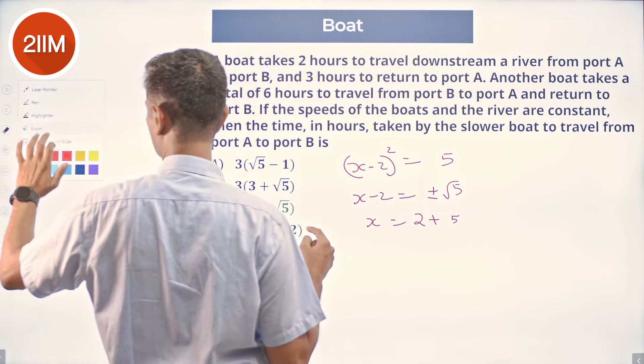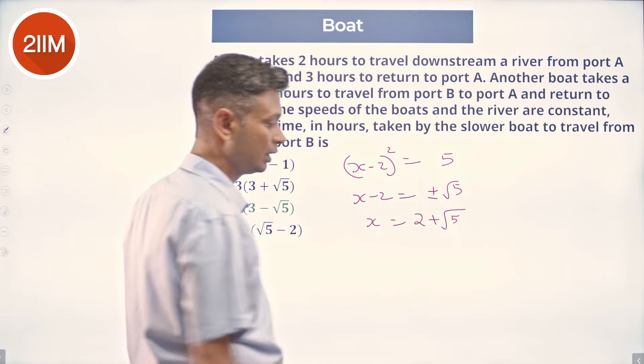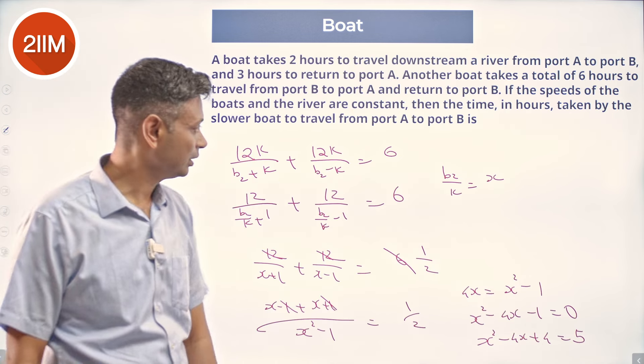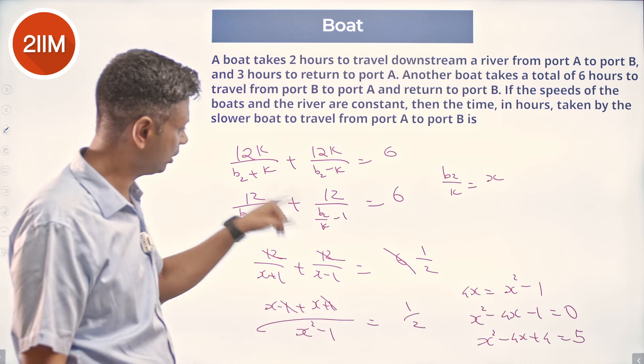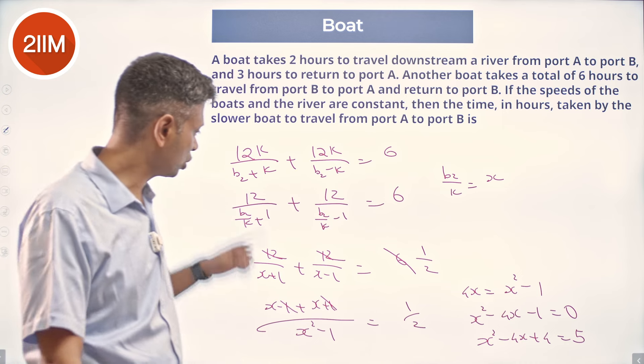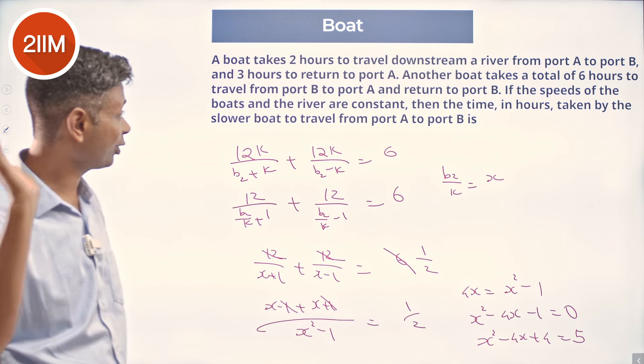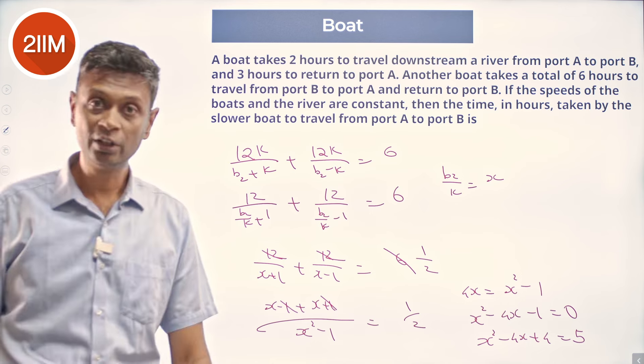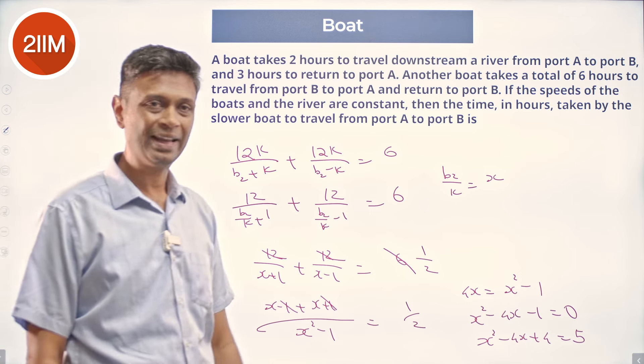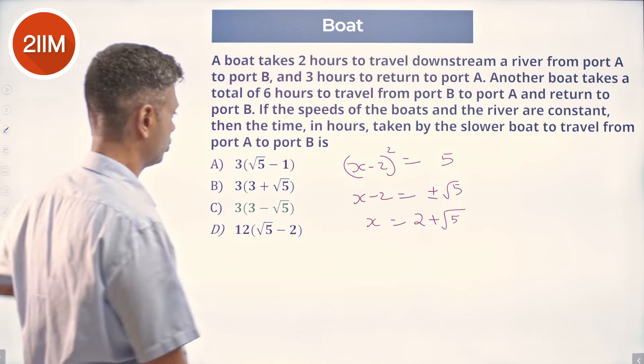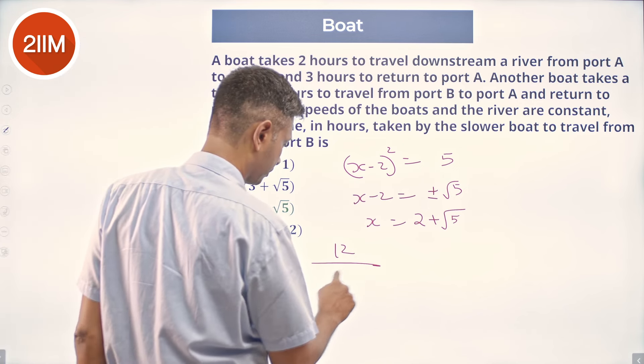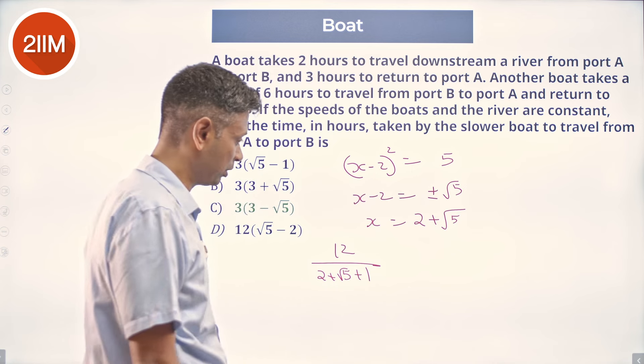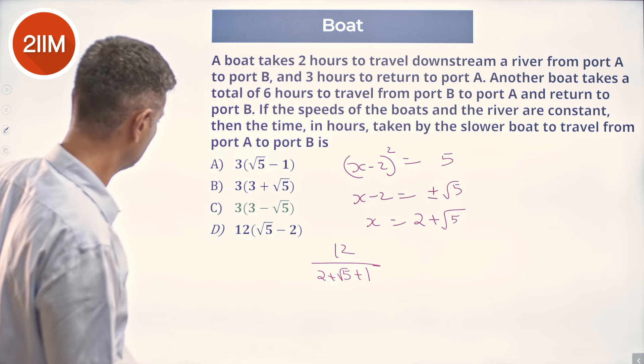x is 2 plus root 5. Now, we come back to this. The time taken here, this is 12 by x minus 1, this is 12 by x plus 1. We are talking about time taken to go downstream, slower boat to travel from A to B, should be the shorter time, should be this. So, this is 12 by x plus 1, I am going to substitute that, we are going to talk about 12 by 2 plus root 5 plus 1, 12 by 3 plus root 5, ok.